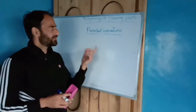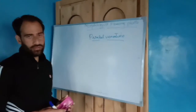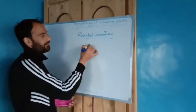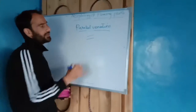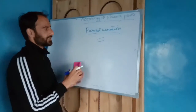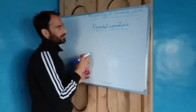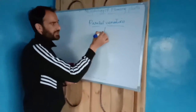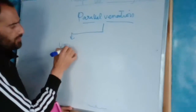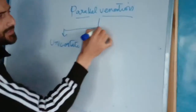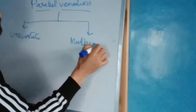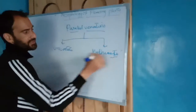Students, today we will continue with parallel venation. Parallel venation means when the veins run in opposite directions or when they are parallel to each other. Parallel venation has been divided into two types: one is called unicostate and the other is multi-costate, as we have already discussed.